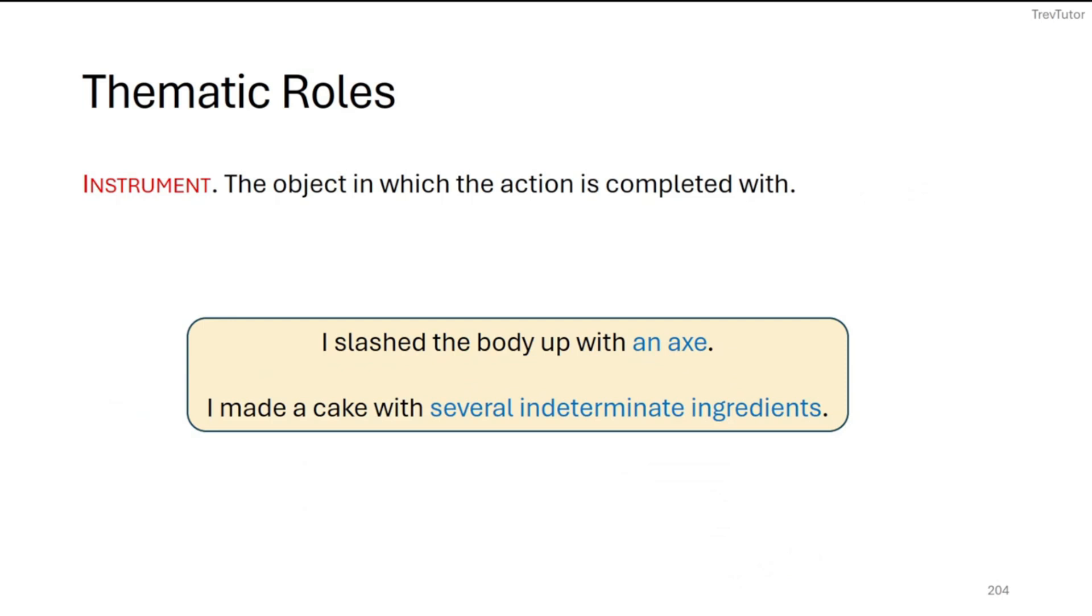The last one we'll talk about is instrument, and this is what you perform an action with. So I slash the body up with an axe, so an axe is the tool you're using in this case, or I made a cake with several indeterminate ingredients. In this case as well, this is the tool that you're using in order to make a cake.